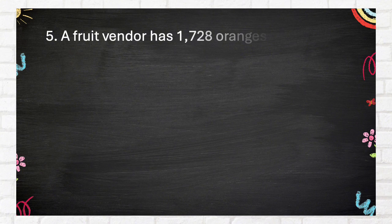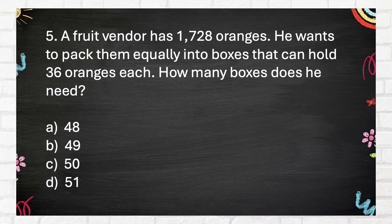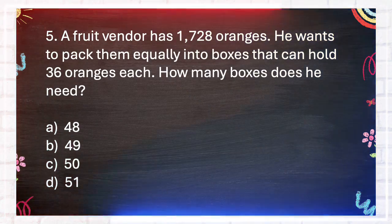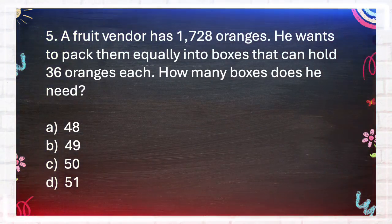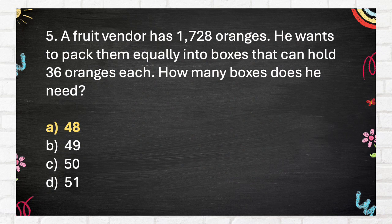Question number 5. A fruit vendor has 1,728 oranges. He wants to pack them equally into boxes that can hold 36 oranges each. How many boxes does he need? A. 48, B. 49, C. 50, D. 51. The answer is A. 48.